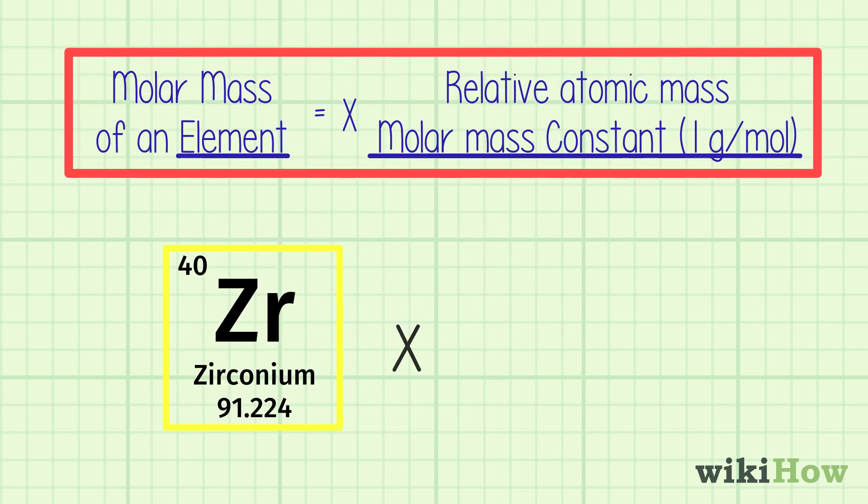Next, multiply the atomic mass by the molar mass constant, which is equal to 1 gram per mole. For most elements, this means that the relative atomic mass is equal to the molar mass.